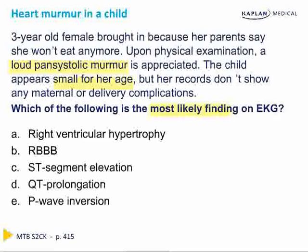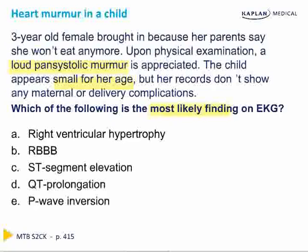Your answer choices are: does this child have right ventricular hypertrophy, right bundle branch block, ST segment elevation, QT prolongation, or P wave inversion? Before revealing the reasoning behind all five answer choices and the correct answer, let's go through the physiology of the underlying diagnosis so that we arrive at the answer together.